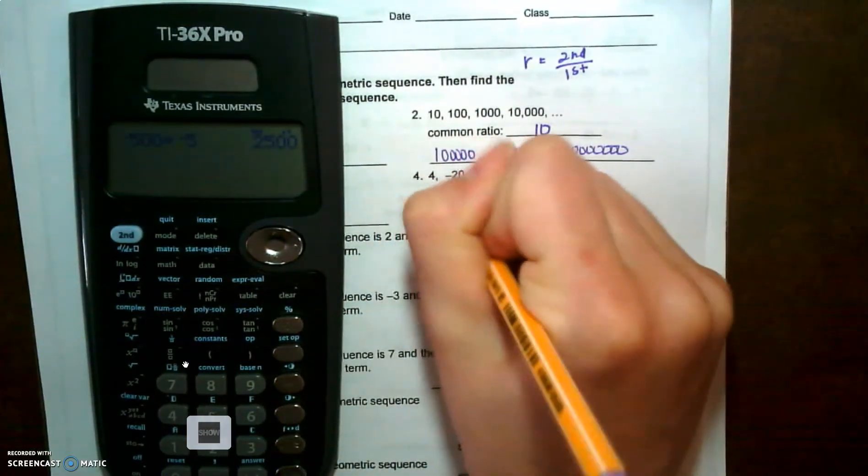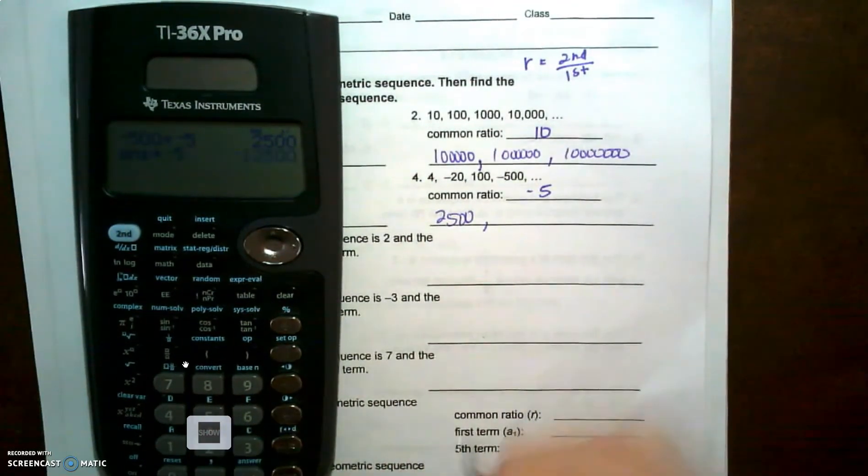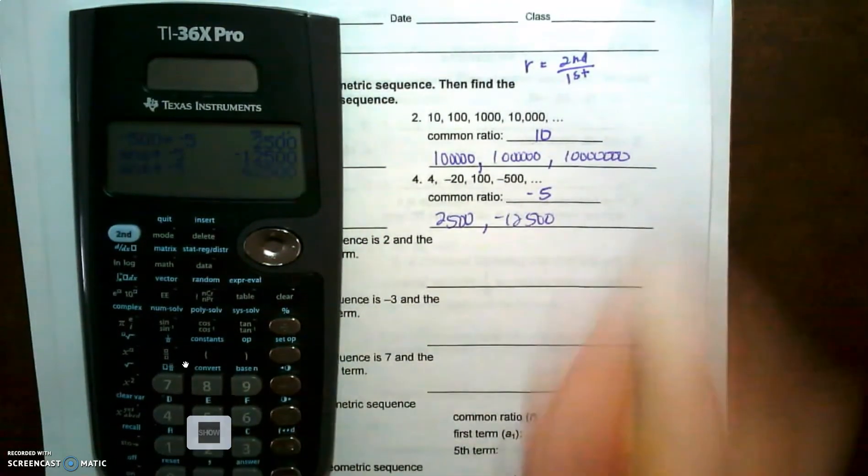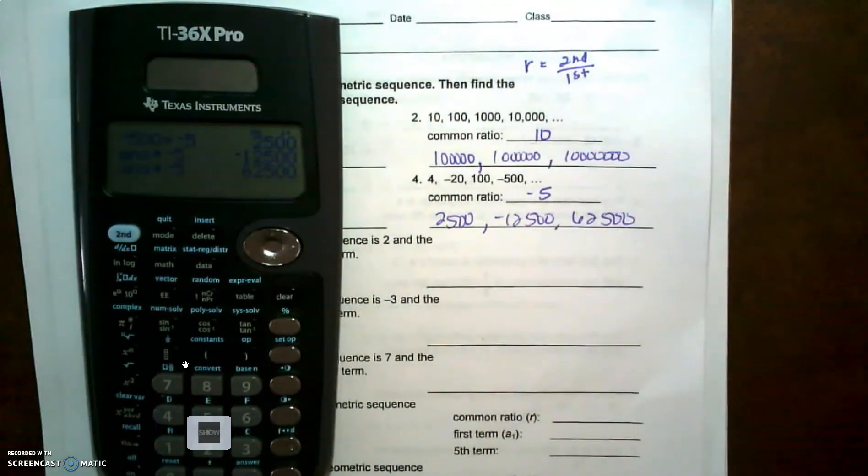Multiply it by negative five: negative twelve thousand five hundred. Multiply that by negative five: sixty two thousand five hundred.